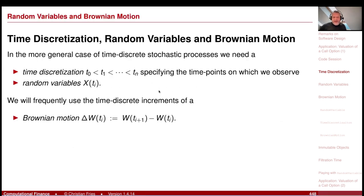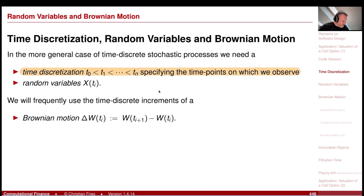I'd like to create reasonable interface definitions for these objects — for the time discretization, for the concept of a random variable, and then for the Brownian motion. IID normals will build the Brownian motion. First thing that often appears is the time discretization, specifying different time points. Time discretization appears inside a stochastic process to form a family of random variables — a good example is the Brownian motion, or more importantly for us, the Brownian increments.